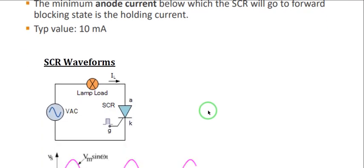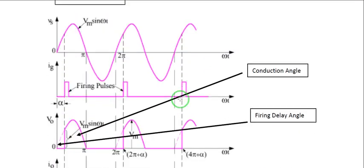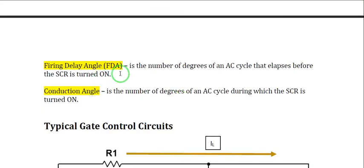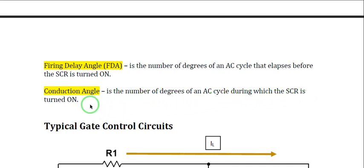Now let us go to SCR waveforms. We have two popular terms: the firing delay angle and the conduction angle. The firing delay angle is the number of degrees of an AC cycle that elapses before the SCR is turned on — this is the angle before the SCR turns on. The conduction angle is the number of degrees of an AC cycle during which the SCR is already turned on.